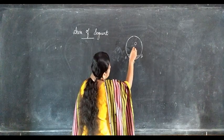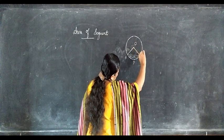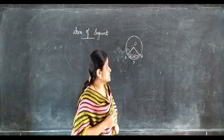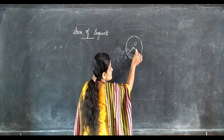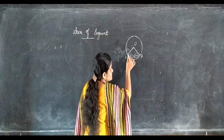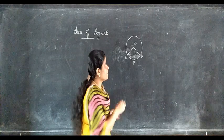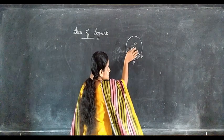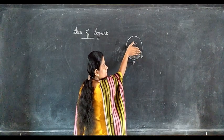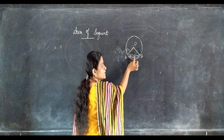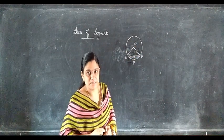Now, if we join OA and OB, you can see this is a sector OAB. From this sector, if we subtract the area of this triangle, what do we get? Yes — the segment.